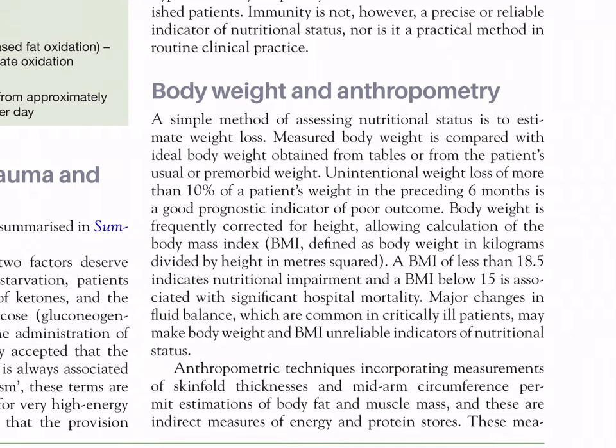Body weight and anthropometry: a simple method of assessing nutritional status is to estimate weight loss. Measured body weight is compared with ideal body weight obtained from tables or from the patient's usual premorbid weight. Unintentional weight loss of more than 10% of a patient's weight in the preceding six months is a good prognostic indicator of poor outcome. Body weight is frequently corrected for height, allowing calculation of the body mass index (BMI), defined as body weight in kilograms divided by height in meters squared. A BMI less than 18.5 indicates nutritional impairment and a BMI below 15 is associated with significant hospital mortality.